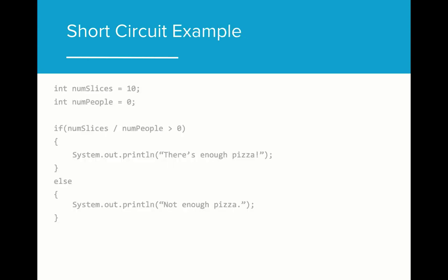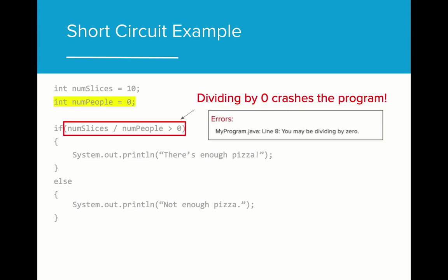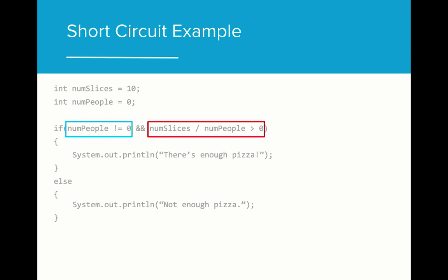Let's take a look at an example. In this program, we want to know if we have enough pizza for the number of people invited to our party. If the number of slices divided by the number of people is greater than zero, then we know that there is enough pizza. If the number of slices per person is below one, then there isn't enough pizza for the group. The problem with this existing code is that the number of people in the program is zero. When this is evaluated in the if statement, it produces an arithmetic exception error because num slices is being divided by zero. We can avoid this problem by adding an AND operator and the condition num people is not equal to zero. Now, when the program runs, the initial Boolean condition num people is not equal to zero evaluates to false, as num people is equal to zero. Because the first expression evaluates to false, the second expression in the if statement is not evaluated, and the program prints that there is not enough pizza.